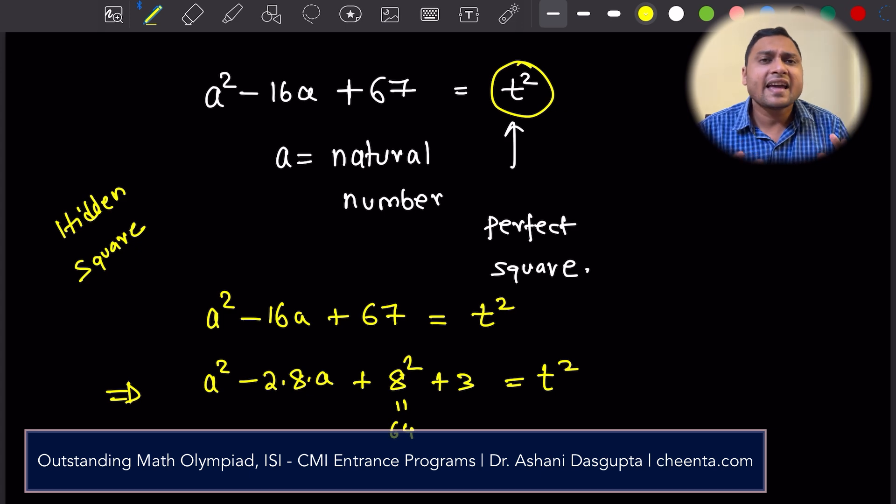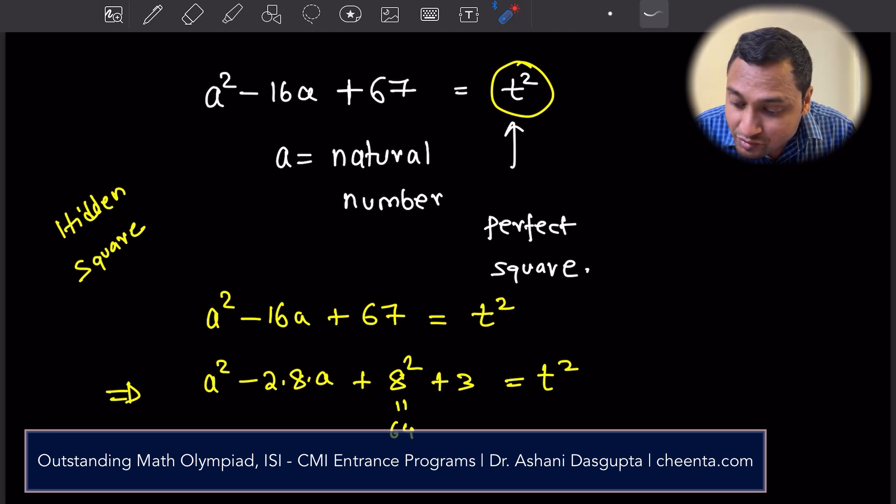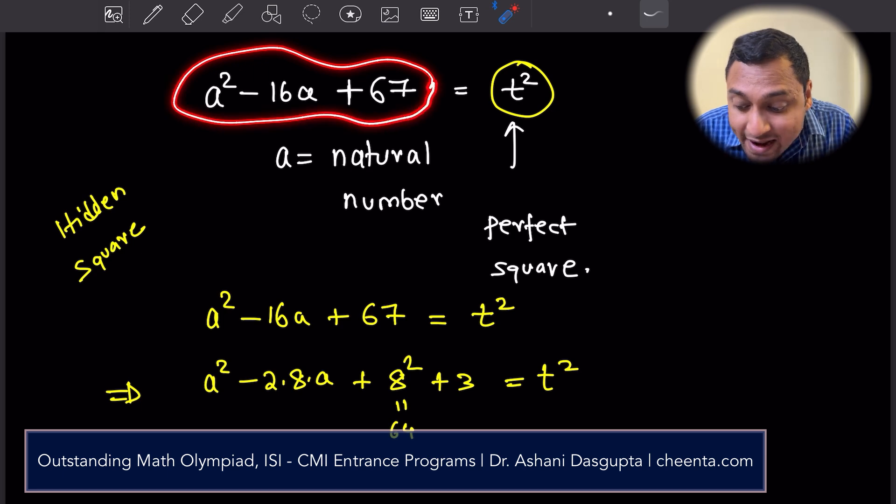Again, it's very handy if you symbolically write t square. Remember, you want to find out when this expression is a perfect square.